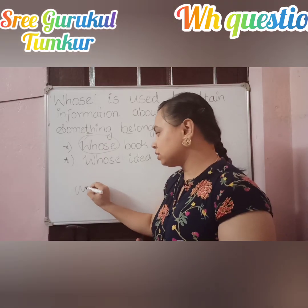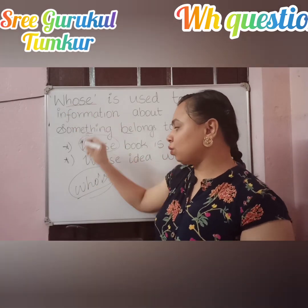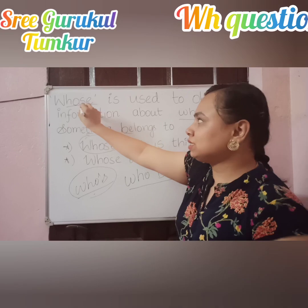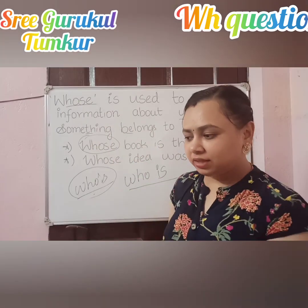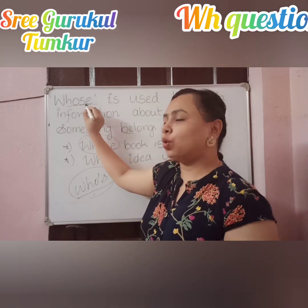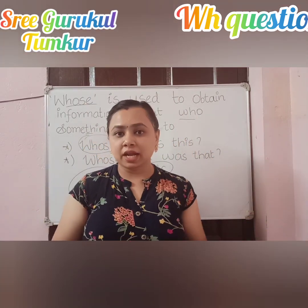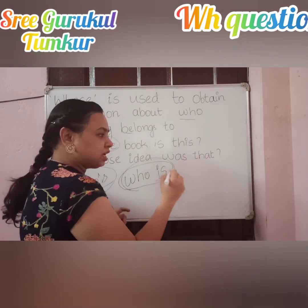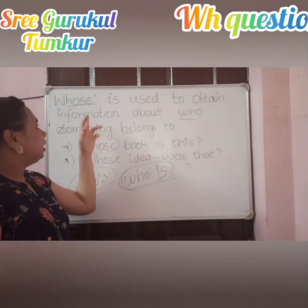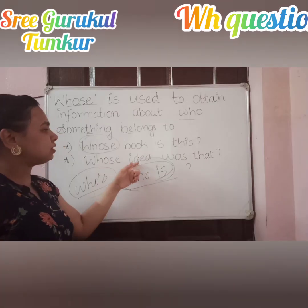There is also 'who's' with an apostrophe (W-H-O apostrophe S). You should not get confused between 'whose' and 'who's'. 'Who's' means 'who is' — we are asking about a person, like 'Who is this?' But 'whose' (W-H-O-S-E) means something belongs to someone. So the difference is: 'whose' is used to obtain information about who something belongs to, examples being 'Whose book is this?' and 'Whose idea was that?'